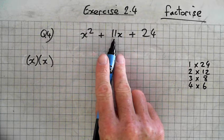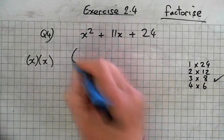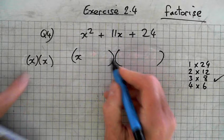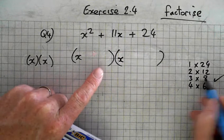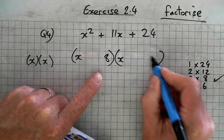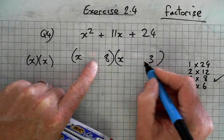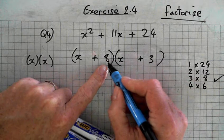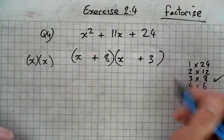Which pair adds up or subtracts to give me 11? 3 and 8. 3 plus 8 is 11. So x goes there. x goes there. We have an 8 and a 3. 8 first, 3 second. How do I get plus 11? Plus 3, plus 8, plus 3. And when I multiply plus 8 times plus 3, I get 24. Correct.